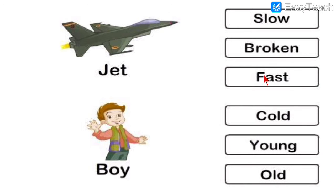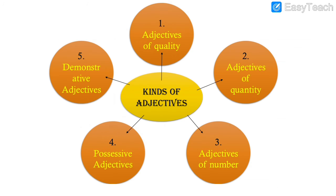Now let us continue today with different kinds of adjectives. Before we continue, I want all of you to write the names of all five kinds of adjectives in your rough book. Number one: adjective of quality. Number two: adjective of quantity. Number three: adjective of number. Number four: possessive adjective. Number five: demonstrative adjective.